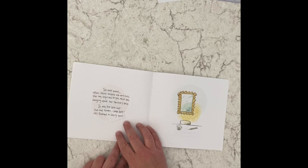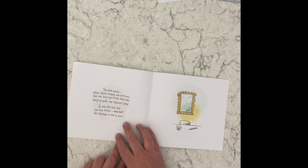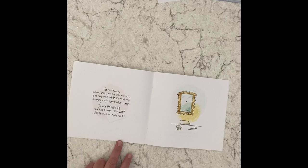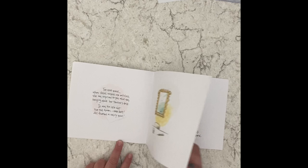The next week, when Vashti walked into the art class, she was surprised to see what was hanging above her teacher's desk. It was the little dot she had drawn, all framed in swirling gold.